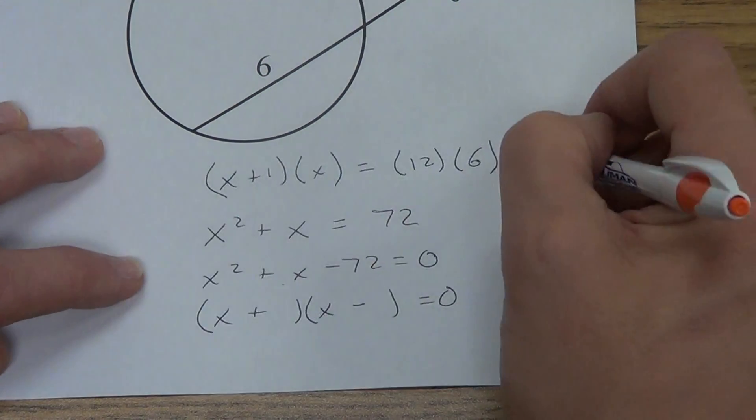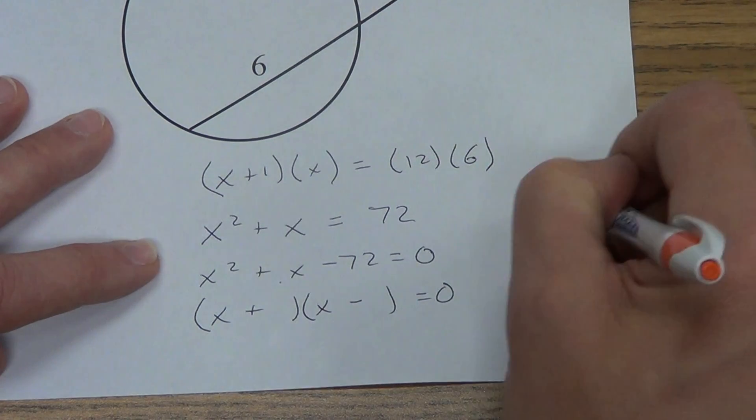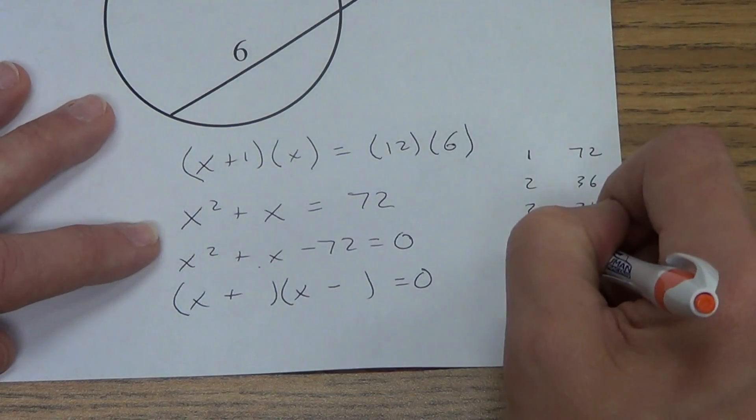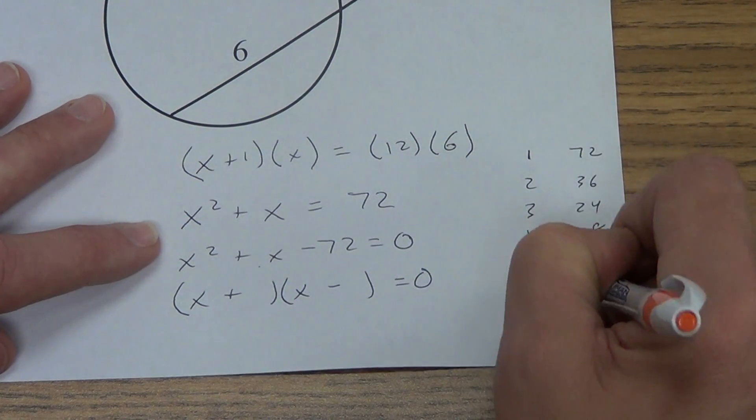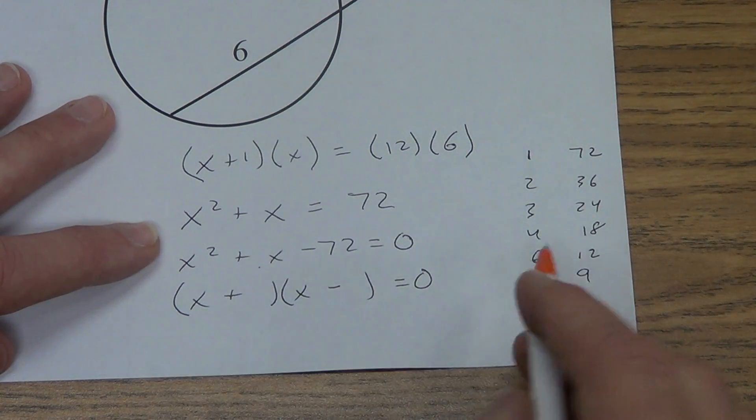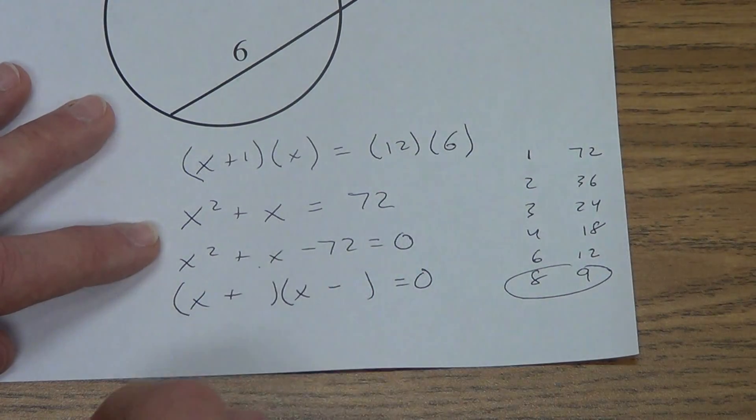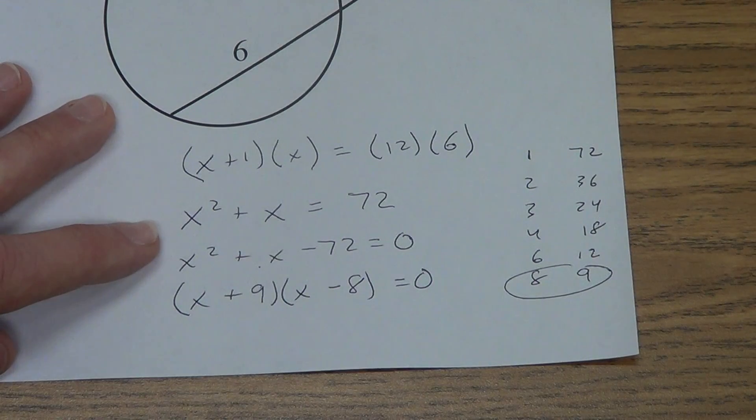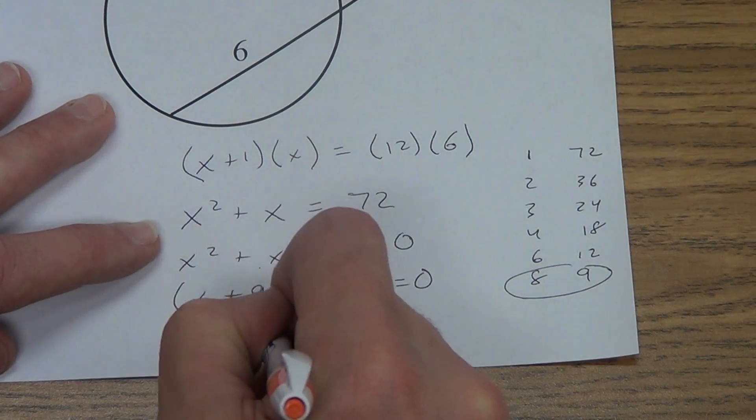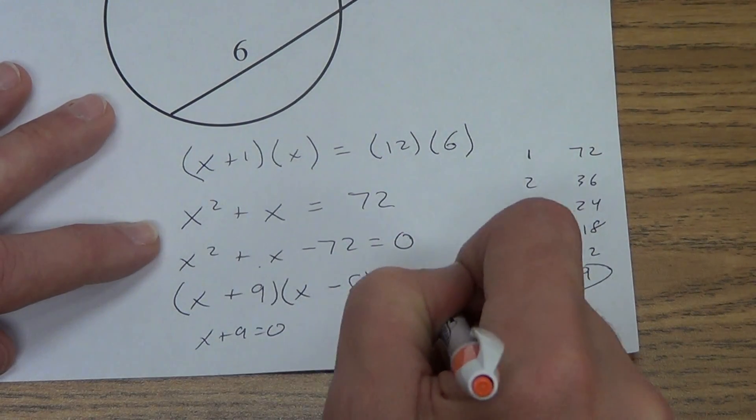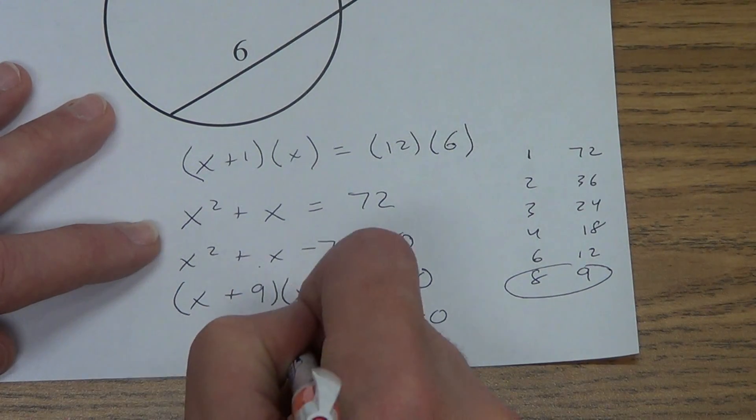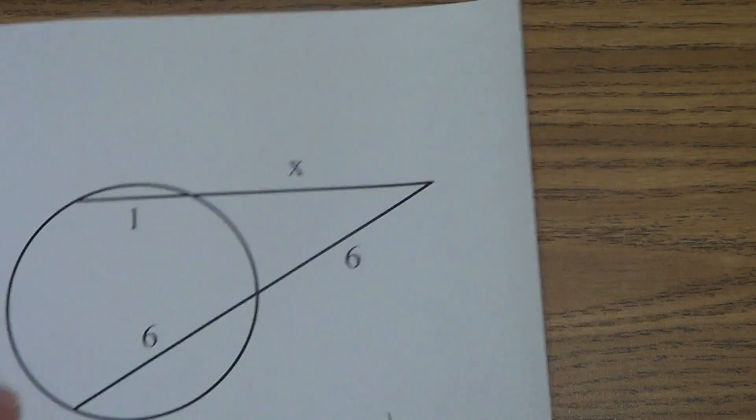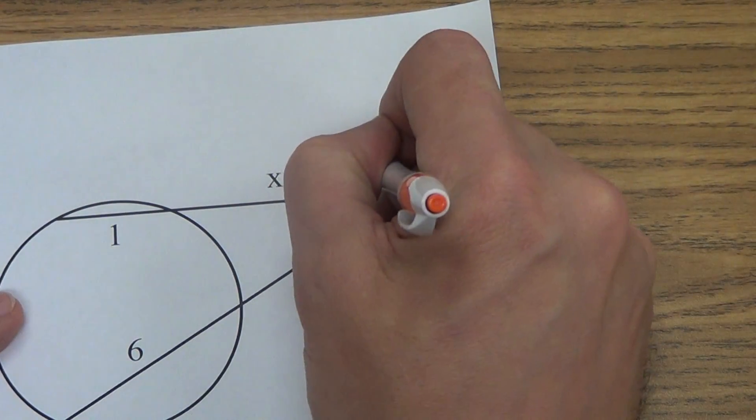What are some numbers that multiply to give me 72? I could do 1 in 72, 2 in 36, 3 in 24, 4 in 18, 6 in 12, 8 in 9. What's the only one that's going to give me a 1 there? It's definitely this 8 and 9. I need a positive one, so the 9 needs to be positive and the 8 needs to be negative. x plus 9 equals 0, x minus 8 equals 0, x equals negative 9, or x equals positive 8. The positive answer makes sense here, so x equals 8 units.